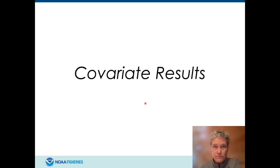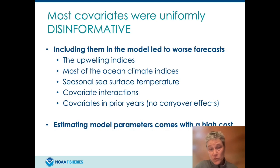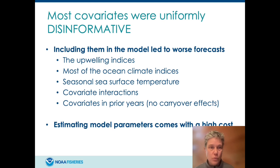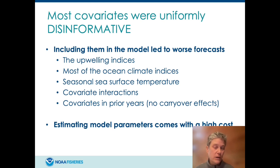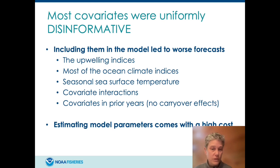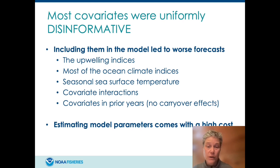The main result was actually a negative one. Most of the covariates were uniformly disinformative — meaning that including those covariates in the model led to worse forecasts. This includes all the upwelling indices, most of the ocean climate indices, seasonal sea surface temperature, any model with covariate interactions, and any model that included a covariate from one or two years prior. These covariates did improve model fit, but we weren't concerned with fit — we were trying to get at forecast performance. This gets to the issue that estimating model parameters comes at a really high forecasting cost.